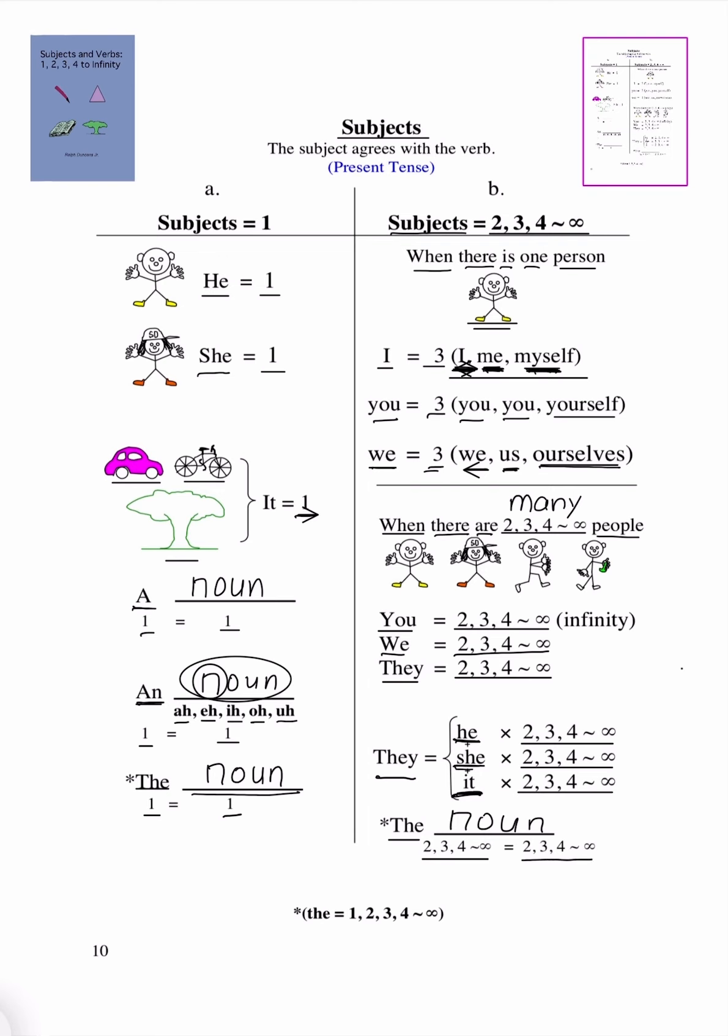But, as we will see here, the has two individual values. One, the as 1, and the as 2, 3, 4 to infinity.